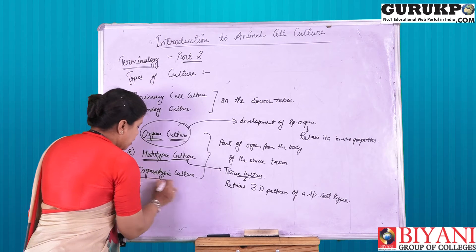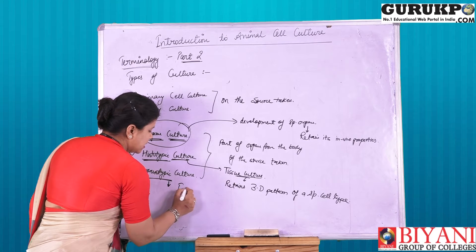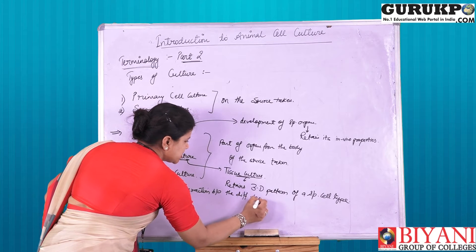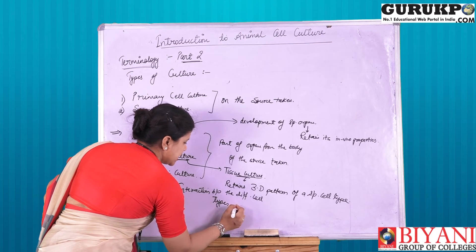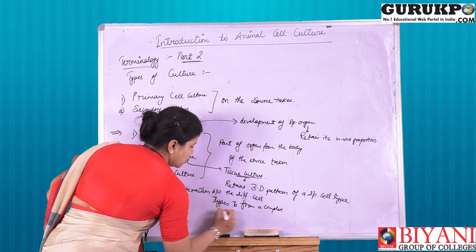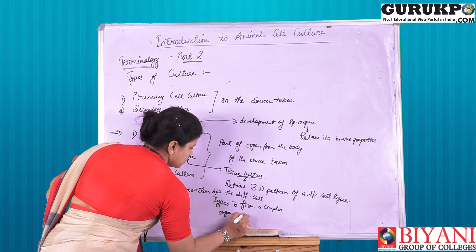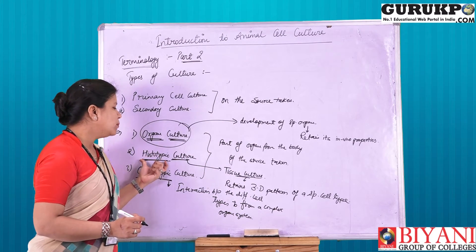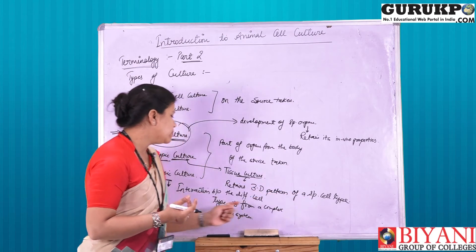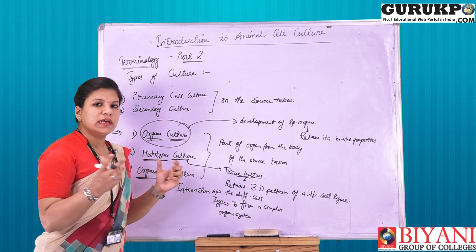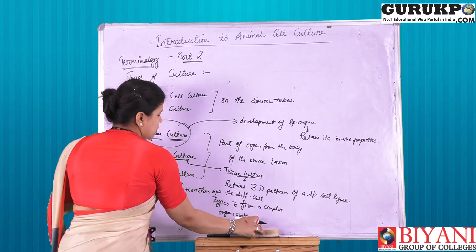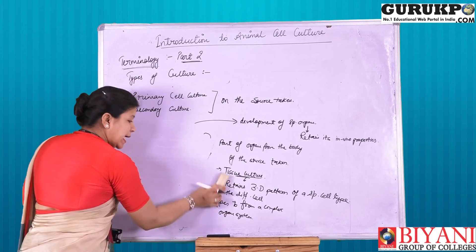The difference between histotypic culture and organ culture is that histotypic culture has the ability to form a specific three-dimensional pattern which we also find in in vivo conditions. Now, organotypic culture involves interaction between different cell types to form a complex organ system. When two histotypic cultures containing different cell types interact between themselves, they give rise to a specific kind of organotypic culture.